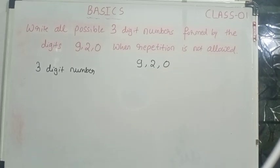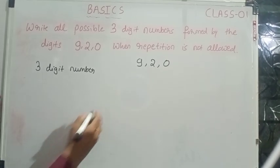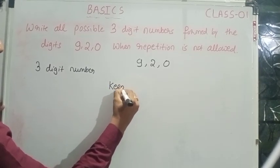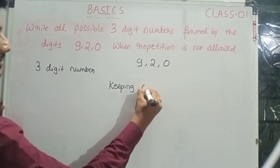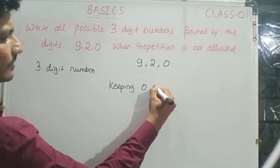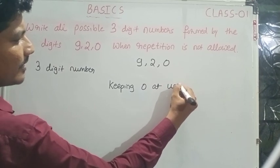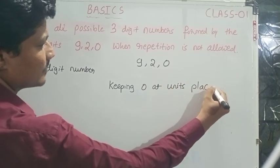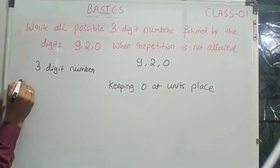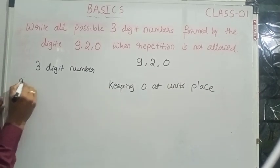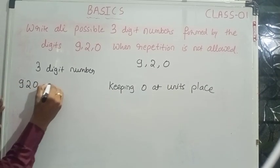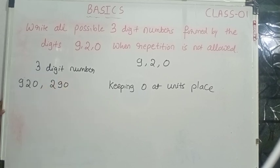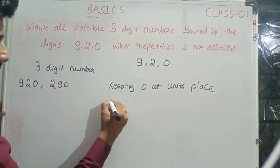Write all possible 3-digit numbers formed by the digits 9, 2, and 0 when repetition is not allowed. Keeping 0 at the unit's place, we get 920 and 290.